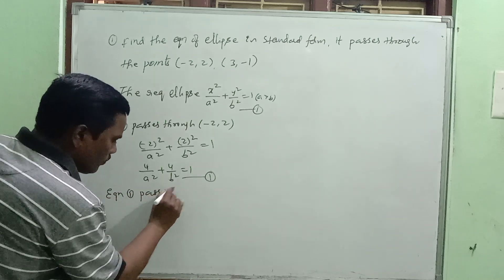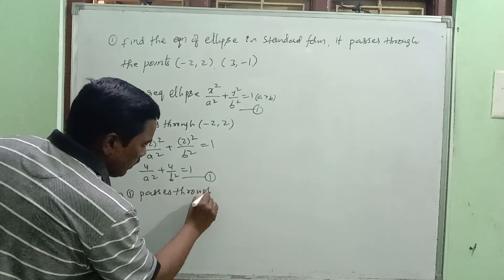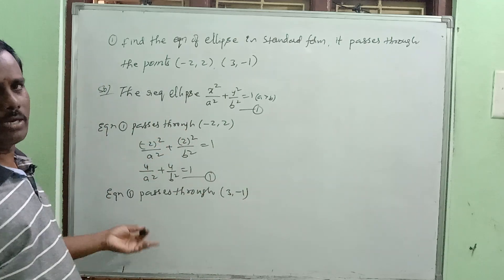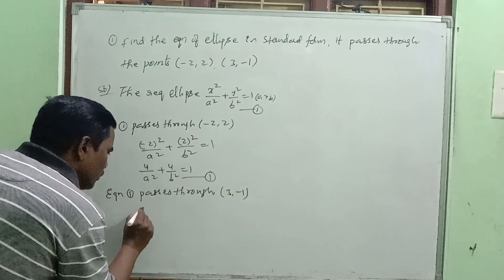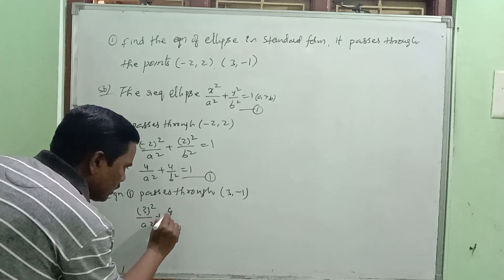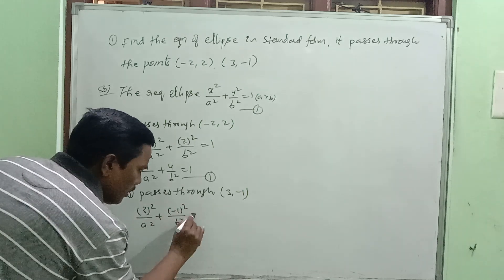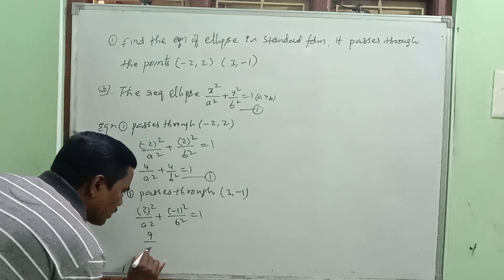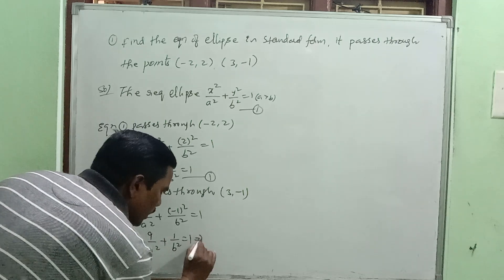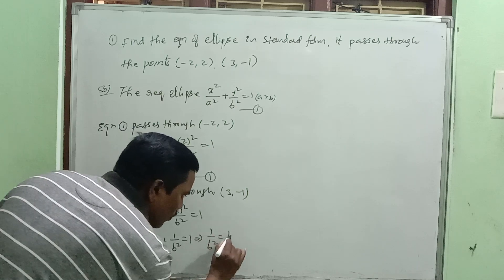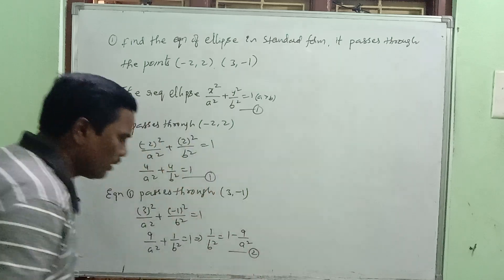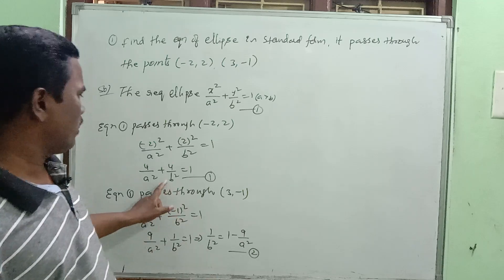Equation one also passes through the second point three comma minus one. Substituting x equals three, y equals minus one: three squared by a squared plus minus one whole squared by b squared equal to one. So nine by a squared plus one by b squared equal to one. From this, one by b squared equals one minus nine by a squared. This is equation two.